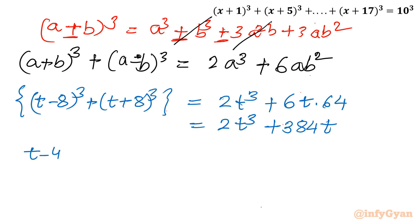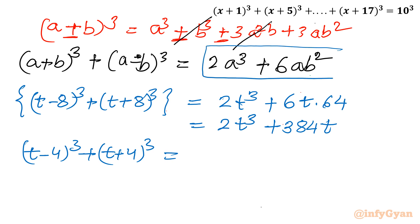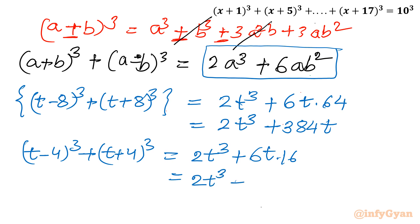Now for the second group: (t minus 4)³ + (t plus 4)³. Using the same formula with a = t and b = 4, it becomes 2t³ + 6t·(4²) = 2t³ + 6t·16 = 2t³ + 96t.